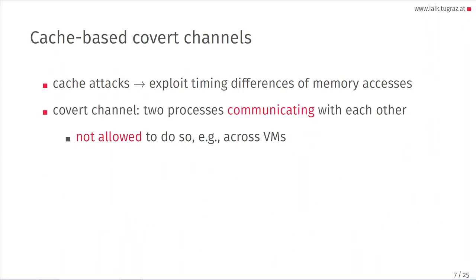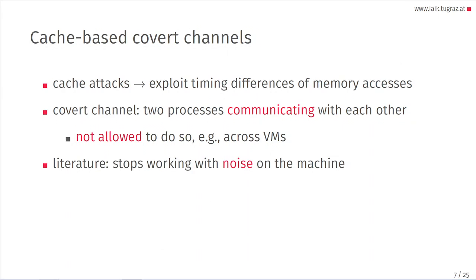This kind of timing difference is what we use in cache attacks. For cache attacks, you have covert channels and side channels — here I will only talk about covert channels. The idea of covert channels is that you have two processes communicating with each other even though they are not allowed to do so. For example, two processes in two different virtual machines should have logical isolation done by the hypervisor, and they should not be able to communicate. They will use a covert channel to bypass this limitation. In the literature, several cache-based covert channels basically all stop working when there's too much noise on the machine, and usually there's a future work section that says just use error correcting codes — we wanted to see if we can actually do that and what the implications are.